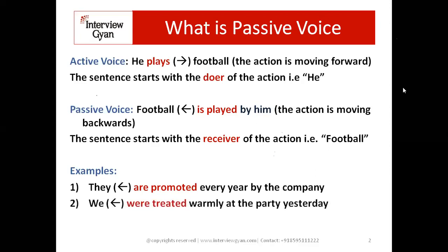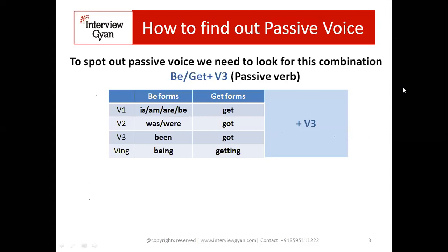The next example is: 'We were treated warmly at the party yesterday' — 'hamein bahut achhe se treat kiya gaya tha party mein.' In this sentence we have not included information about the doer — who treated us is not mentioned. The doer portion is not written. That's what we need to fix: in a passive voice sentence, the receiver is important and the doer is not important. You can include or exclude the doer, and it won't affect the framing. The combination 'were treated' in red is the passive voice combination.